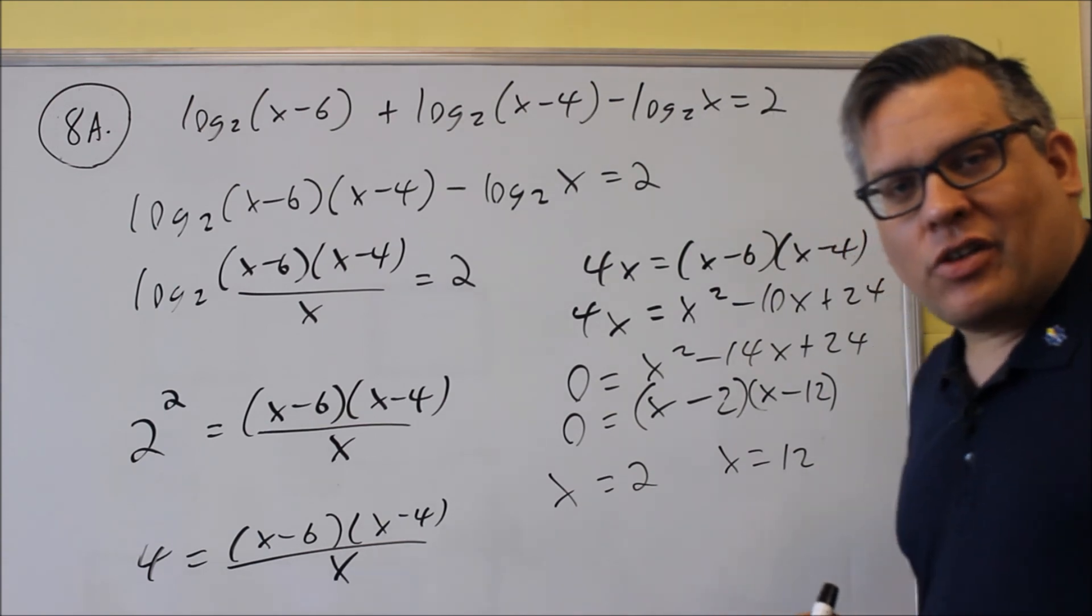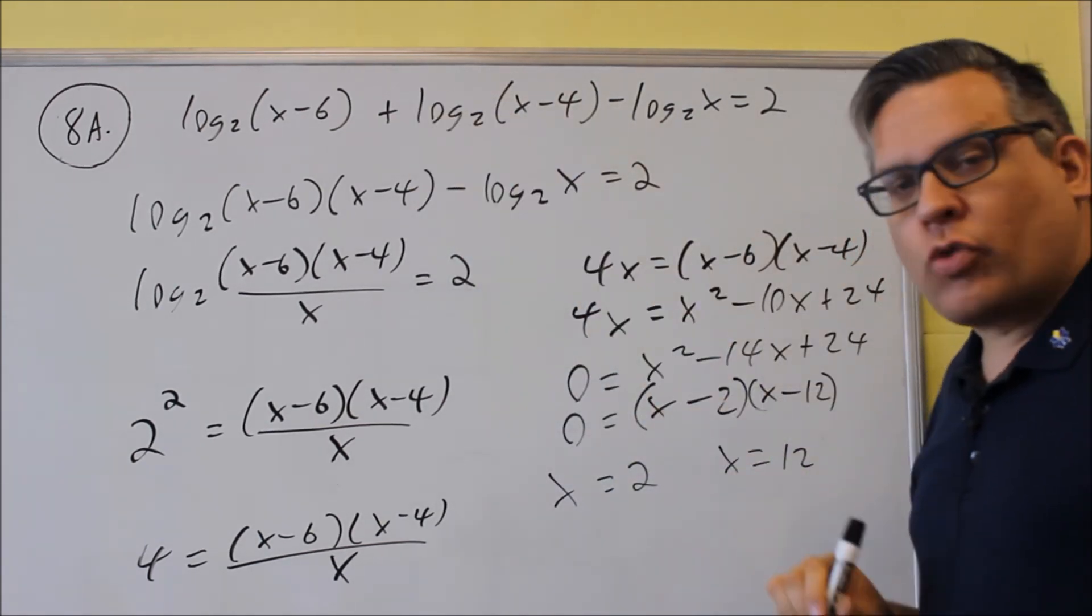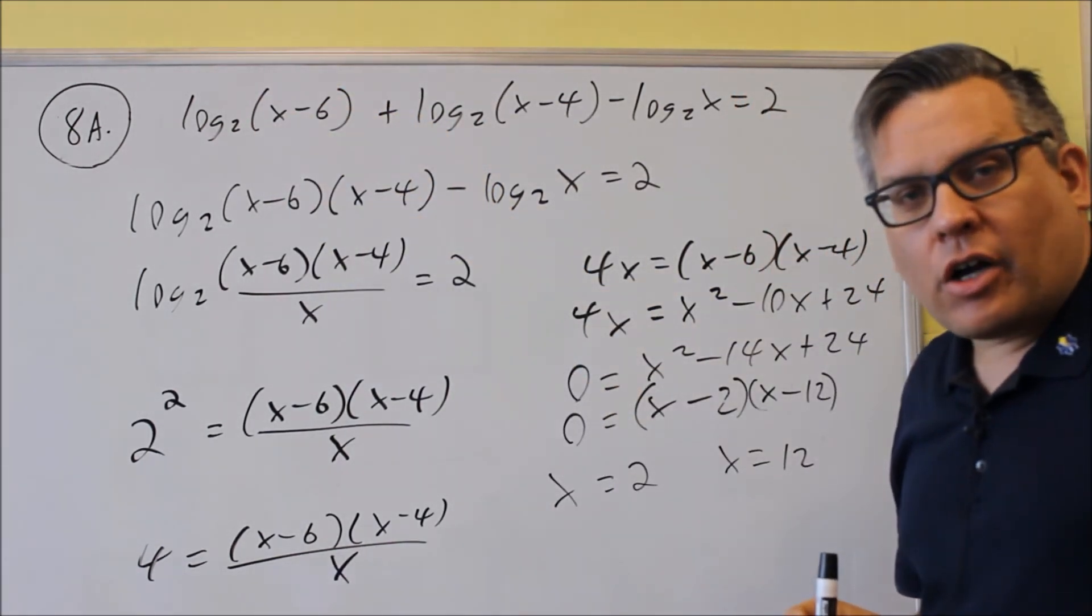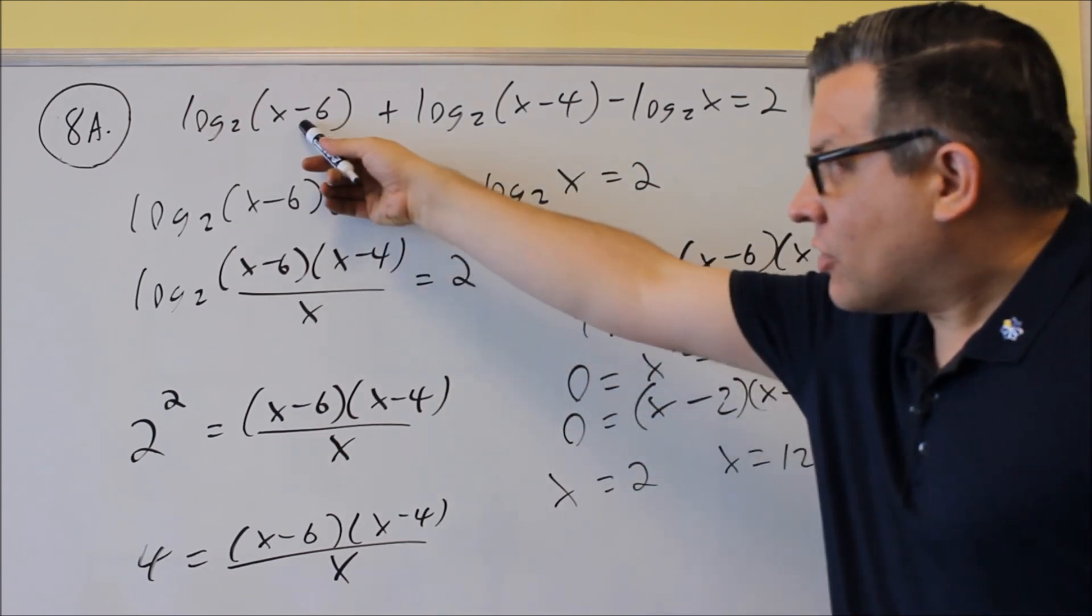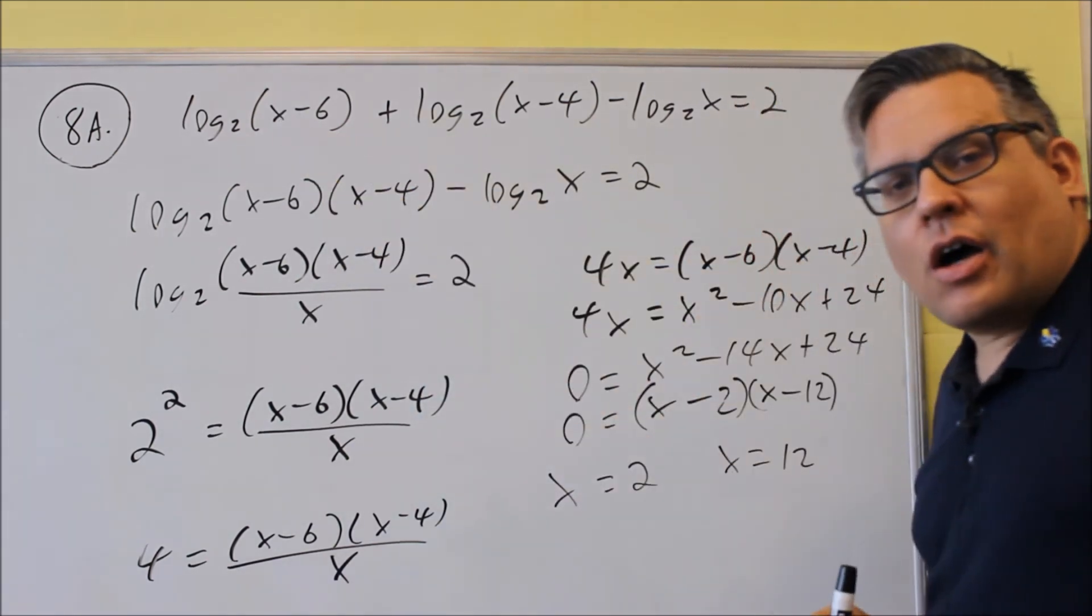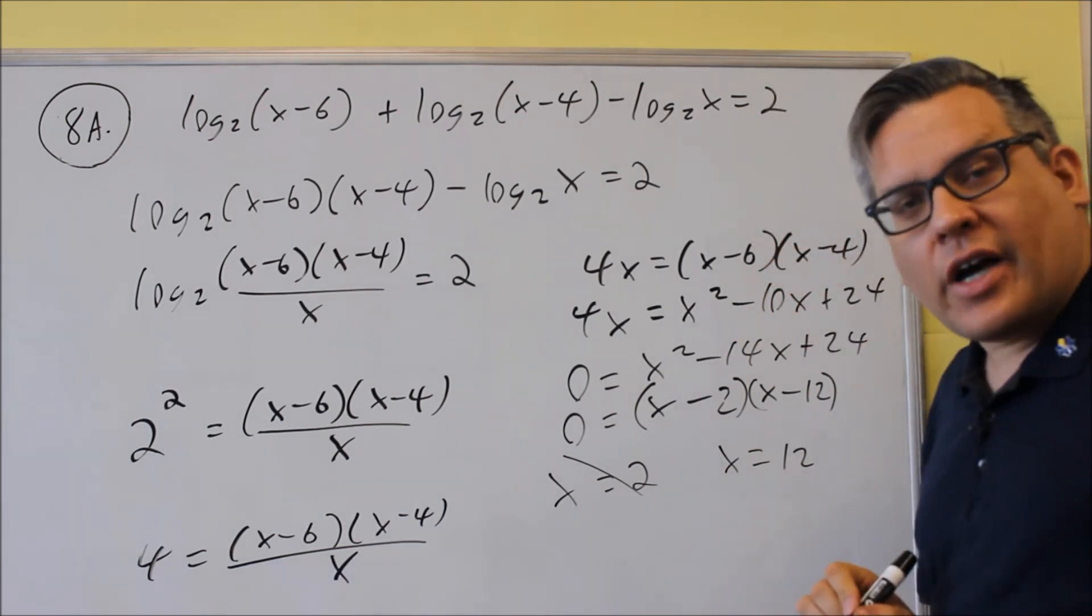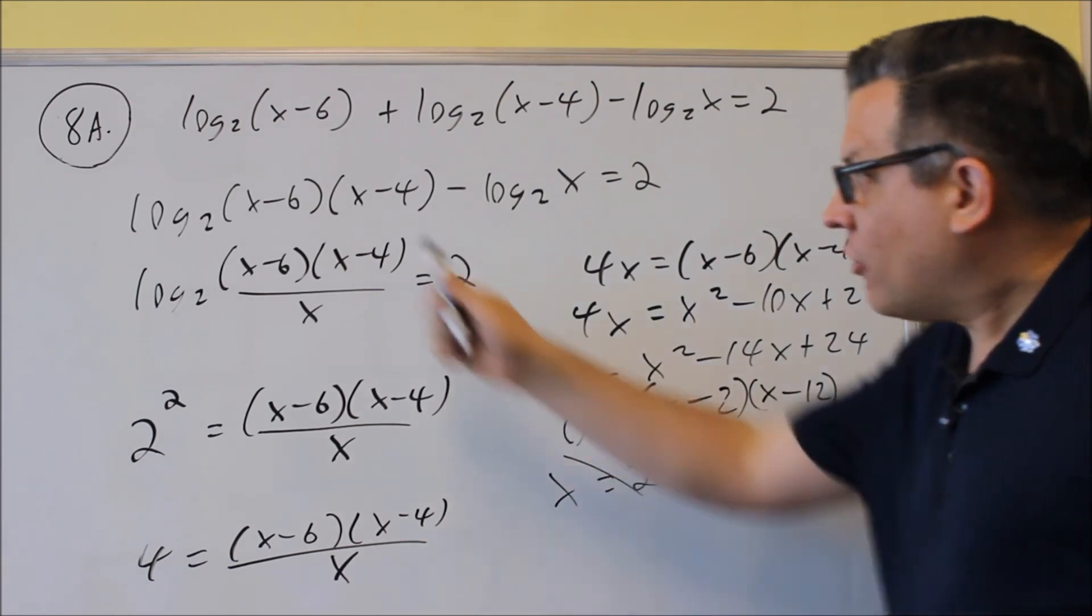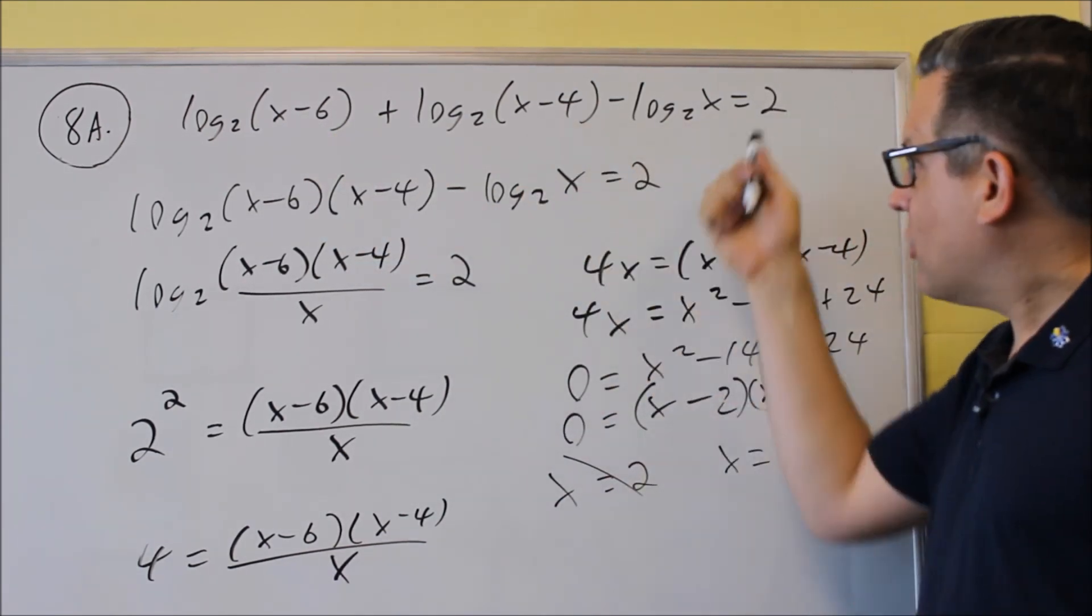Now whenever you get something like this, you always need to take these two numbers and go back into the original equation and make sure you don't get a negative number or a zero inside the log. Now, if we take two, one of our answers, and put it back into this first one, we get log over negative number, and we can't do that because domain is only positive numbers. So the two, we're going to cross out. So because that one's not included, we're going to look at twelve now. Now twelve minus six is positive, twelve minus four is positive, and so because of that,